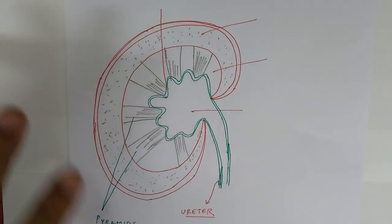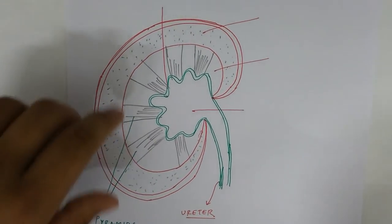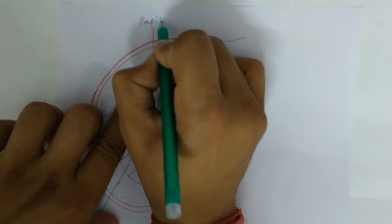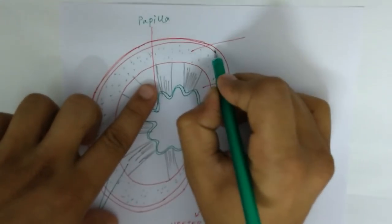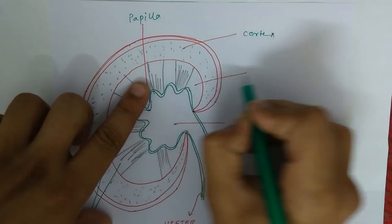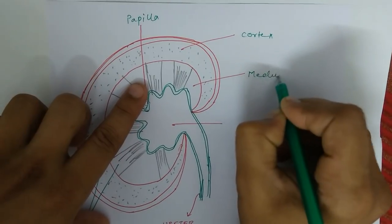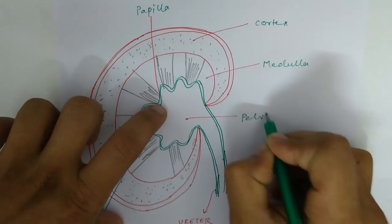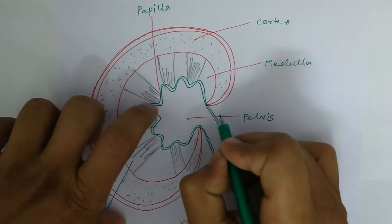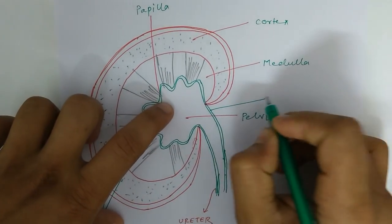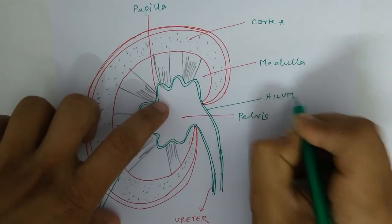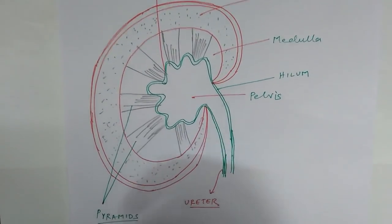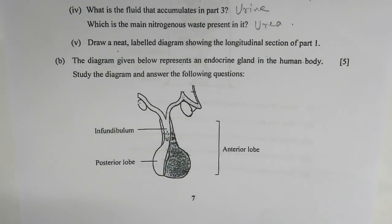Number five — draw a neat labeled diagram showing the longitudinal section of part 1. I have drawn the figure showing the longitudinal section of a kidney. The sections labeled are: papilla, cortex, medulla, pelvis, hilum, ureter, and the pyramids.